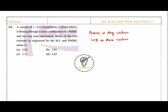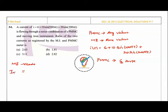For the given equation I(t) = 6 + 10sin(100πt) + 20sin(200πt), PMMC reads the average value, which is 6 amps. The moving iron instrument reads IRMS = square root of...